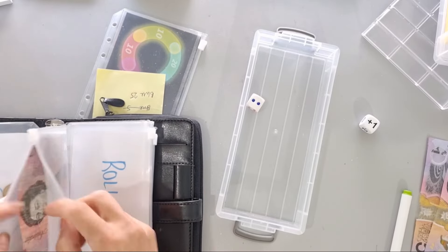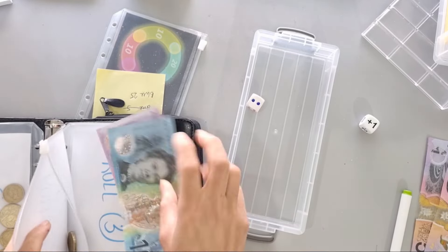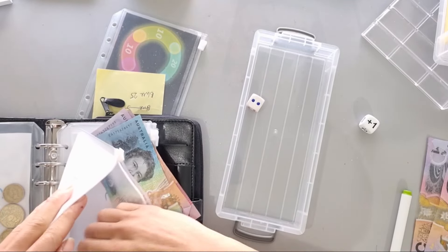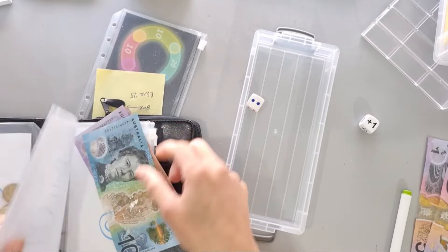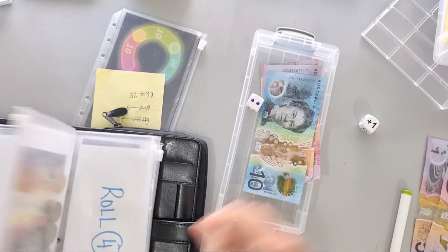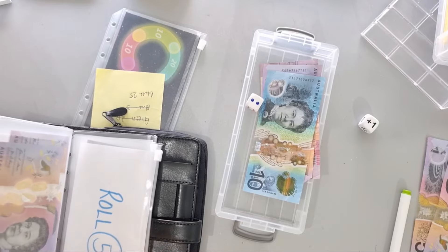And that one has got $2 in there. Now with number two, this one was completed so it's got $5 in coins. Let's exchange that $5 for a five dollar note.